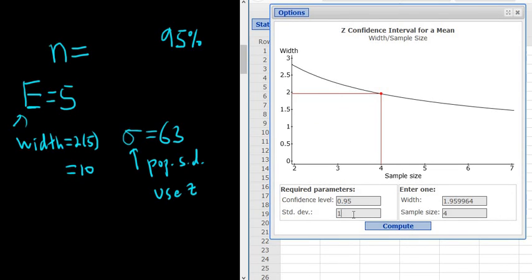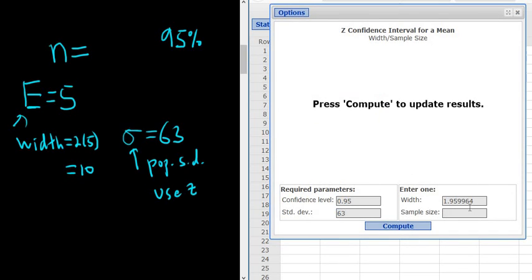The level is okay. The standard deviation is 63. And the width is 10. Everything else looks okay. So confidence level, standard deviation, width. Compute.